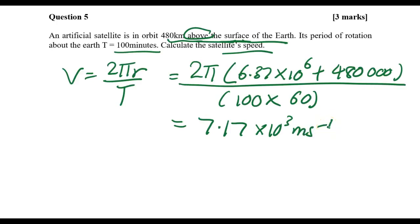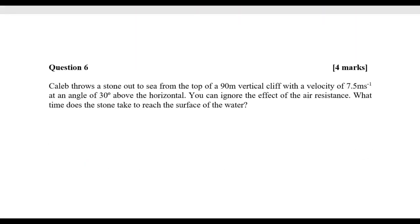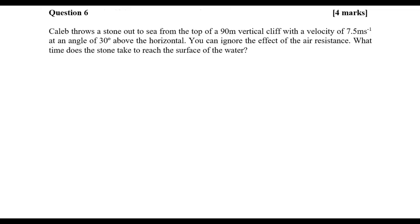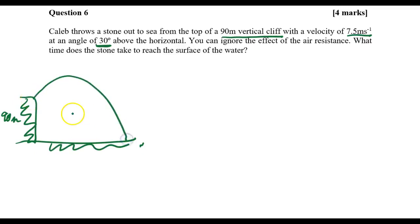This is fairly straightforward. I shall move on to question number six. Caleb throws a stone out to sea from the top of a 90-meter vertical cliff with a velocity of 7.5 meters per second at an angle of 30 degrees above the horizontal. You can ignore the effect of air resistance. What time does the stone take to reach the surface of the water? You can sketch it out. In this case, perhaps this is some cliff, and you know the height of this cliff to be 90 meters. You have water here and you have a projectile, perhaps of this trajectory, because it makes 30 degrees. The speed here is 7.5 meters per second. You can sketch out all this so that it is easier for you to imagine. How do I find the time?